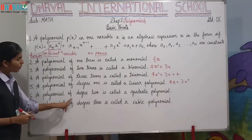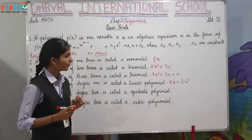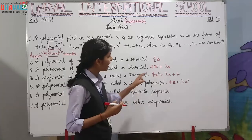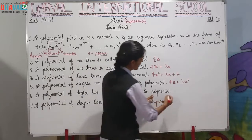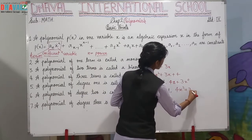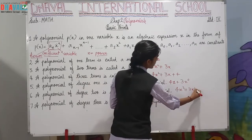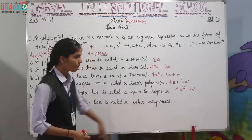Next, a polynomial of degree 2 is called a quadratic polynomial. This polynomial has highest degree 2. The example is 4x squared plus 3x, where the power of x here is 2 and here is 1. So highest power will be 2, so it will be called quadratic polynomial.